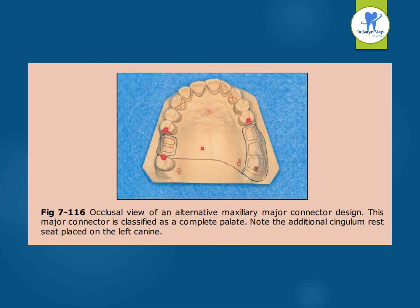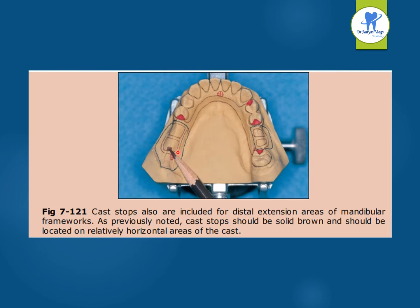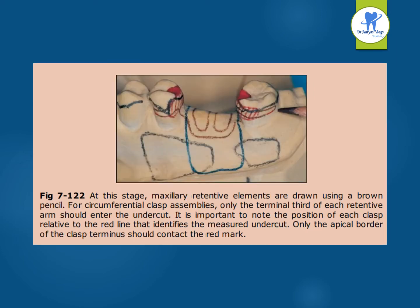The occlusal view of an alternative maxillary major connector design shows a complete palate classification. An additional cingulum rest seat is placed on the left canine. Cast stops are included for distal extension areas of mandibular flanges. These cast stops should be solid brown and located on relatively horizontal areas of the cast. The maxillary retentive elements are drawn using a brown pencil. For circumferential clasp assemblies, only the terminal third of each retentive arm should engage the undercut.